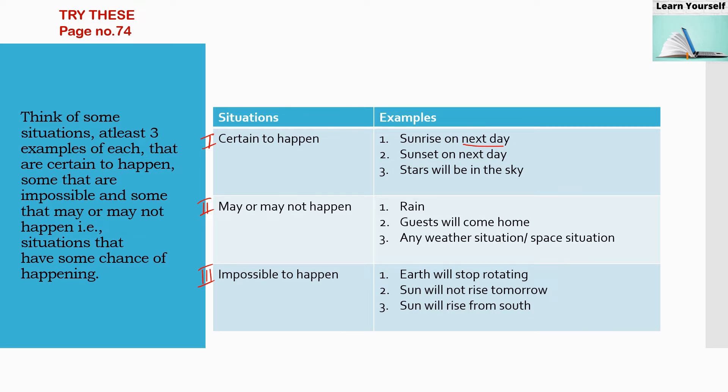Third one, any weather situation or space situation, that today night it is going to be a meteor shower, or today it will be cloudy weather, or tomorrow it is going to rain. Any weather situation will come under may or may not happen.